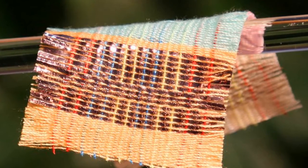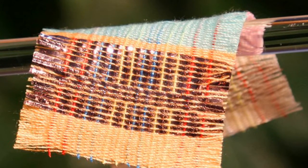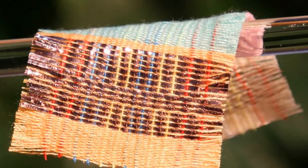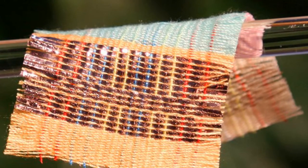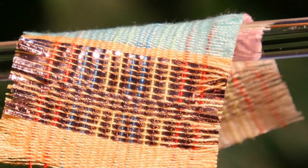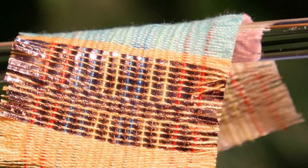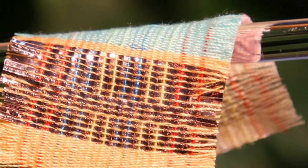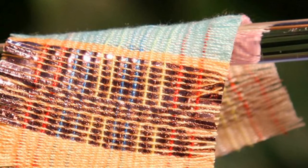High-tech fabrics could soon allow you to charge your devices on the go simply by standing outside on a sunny, breezy day. Researchers have developed a hybrid power textile that generates electricity from both sunshine and motion, using a combination of solar cells and triboelectric nanogenerators.